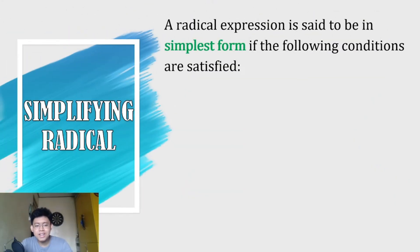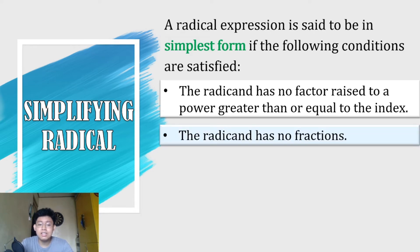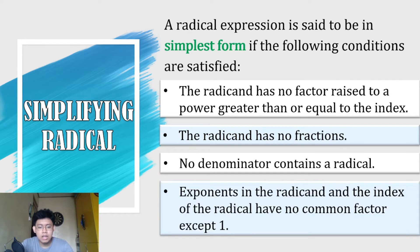In simplifying radicals, we must satisfy the following conditions. First, the radicand has no factors raised to a power greater than or equal to the index. Second, the radicand has no fractions. Third, no denominator contains a radical. And last, exponents in the radicand and the index of the radical have no common factors except for one.